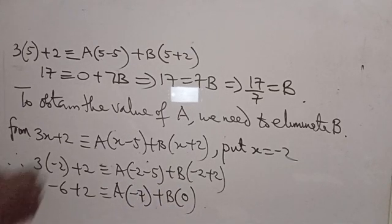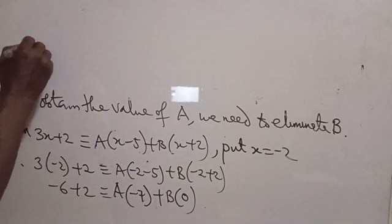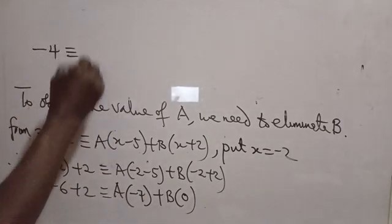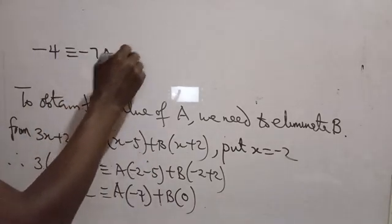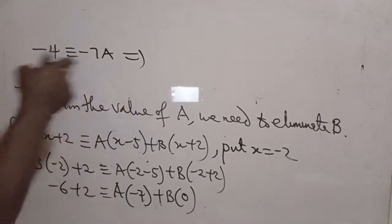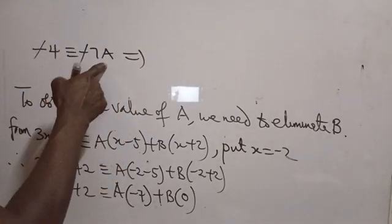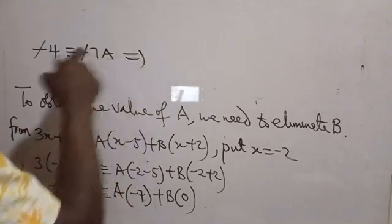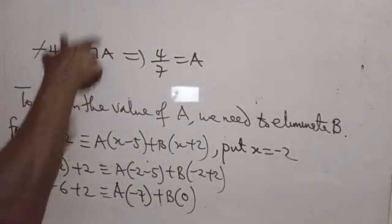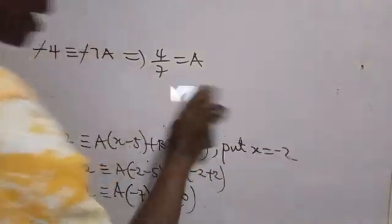Expanding: minus 6 plus 2 is minus 4. This corresponds to A times minus 7, that is minus 7A. B times 0 is 0, so we don't need that. Dividing through by minus: minus 4 equals minus 7A, the minuses cancel. Dividing both sides by 7: A equals 4 over 7.